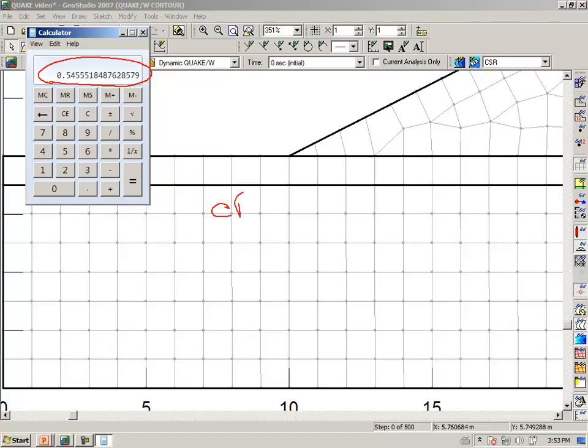Times 0.65 gives us a result very close to 0.55. So the cyclic stress ratio at this point with hand calculations is 0.55, the same as was listed in the output results for the quake analysis.